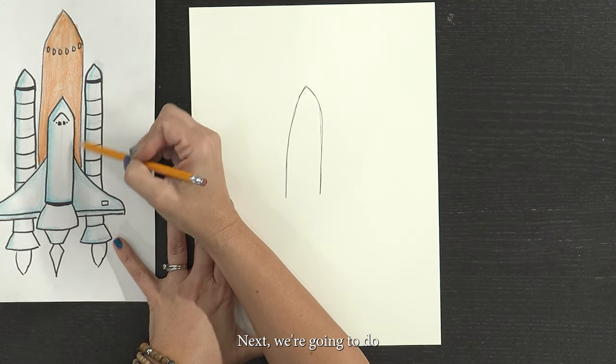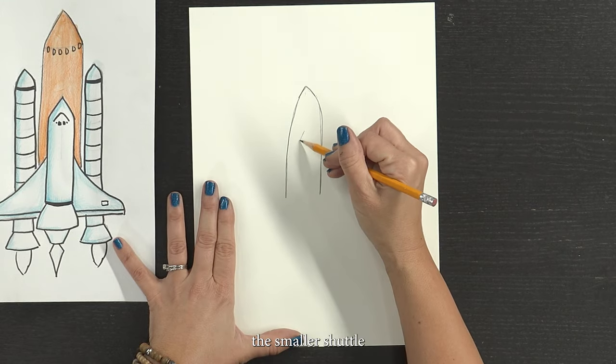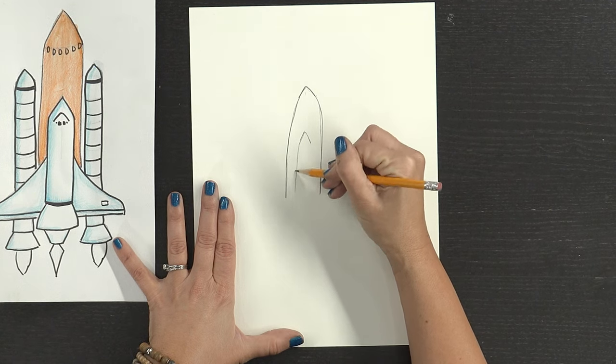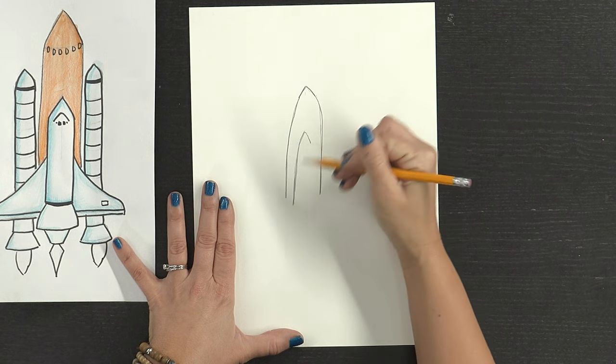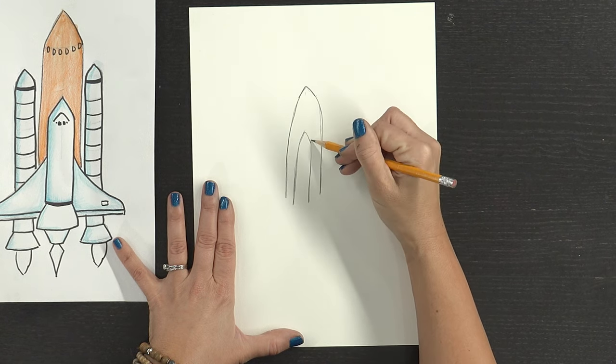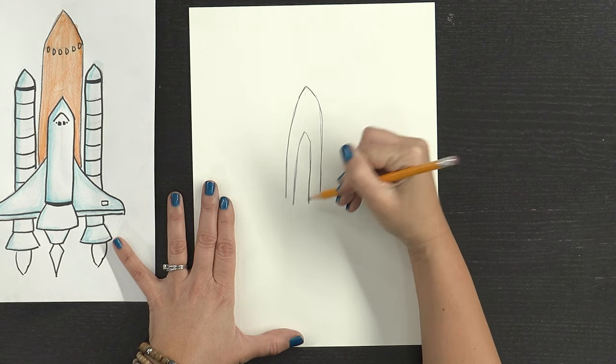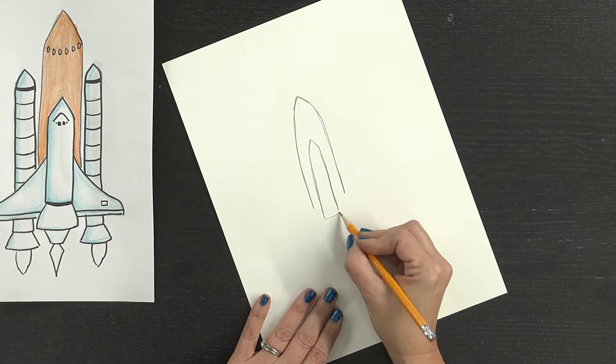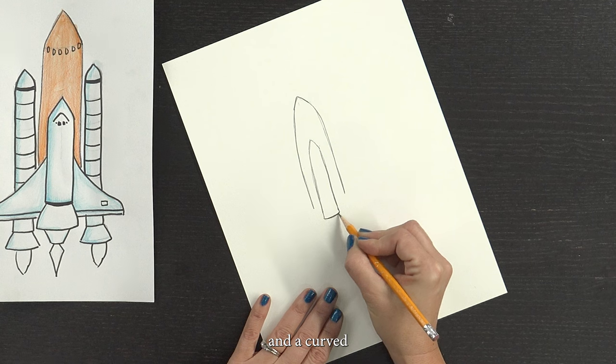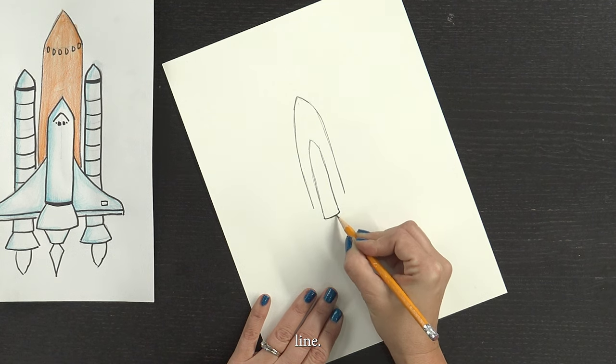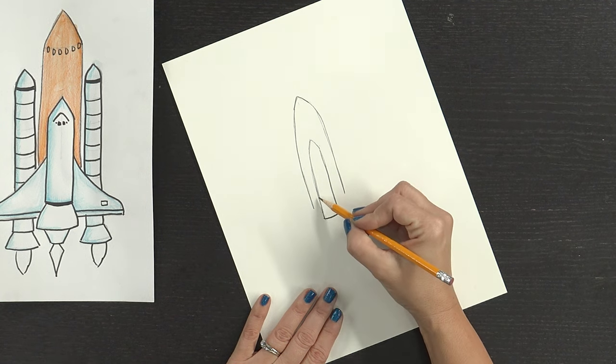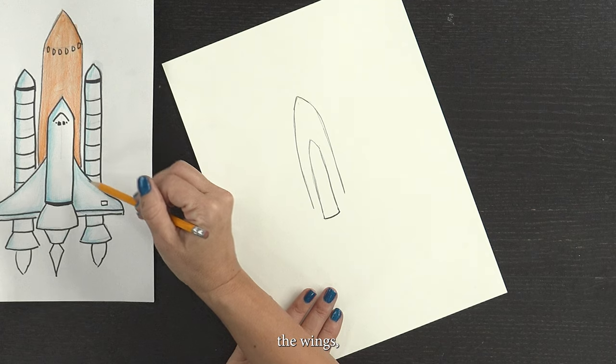Next, we're going to do the smaller shuttle on the inside and a curved line. Next, we're going to draw the wings.